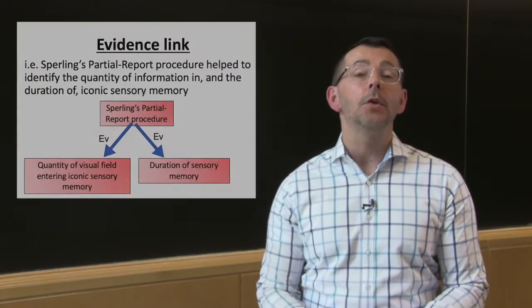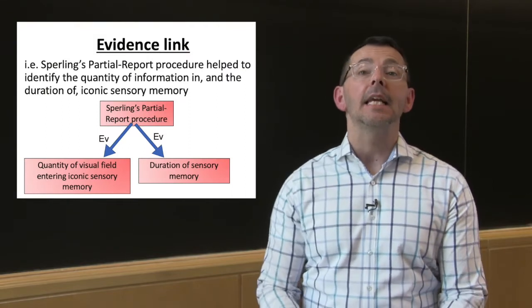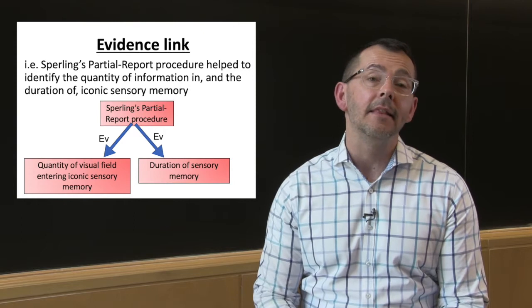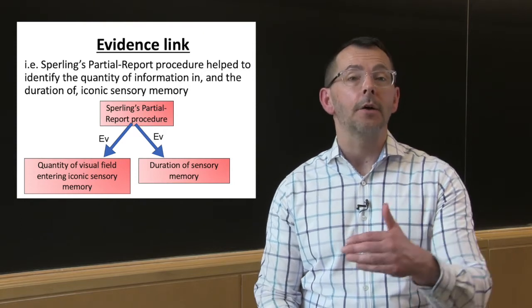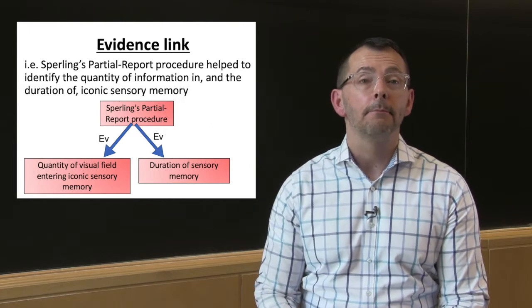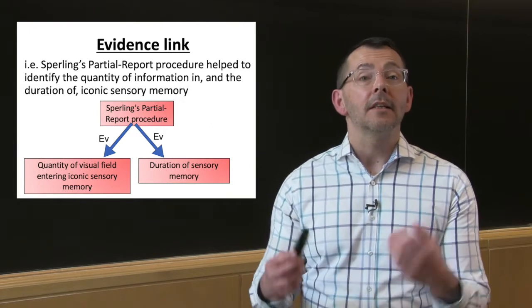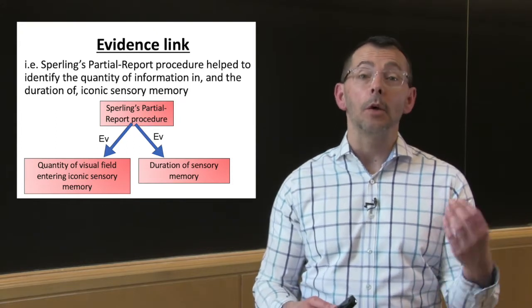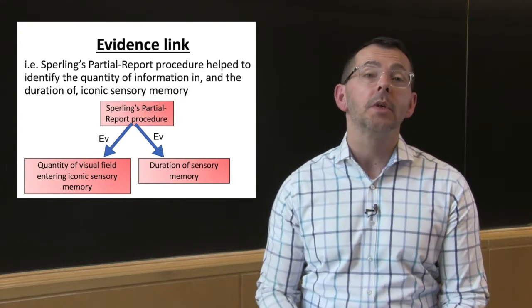And finally, we can use an evidence link to indicate that the higher layer is the proof that supports the idea in the lower layer. So, A with an arrow to B means that concept A provides evidence for concept B. In the example here, we see that Sperling's partial report procedure helped provide us with evidence about the quantity and duration of visual sensory memory.